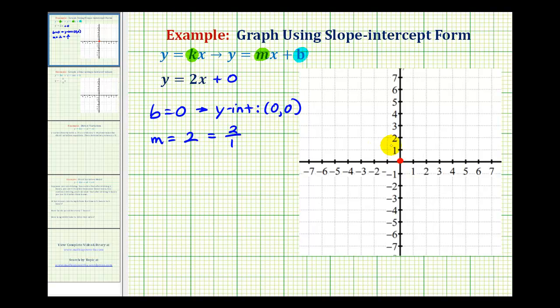And since the slope is 2 over 1, the vertical change is up 2, and the horizontal change is right 1. So we'll go up 2, right 1. So here's another point that would be on our line. And of course, we can do this again, up 2, right 1, up 2, right 1, and so on.